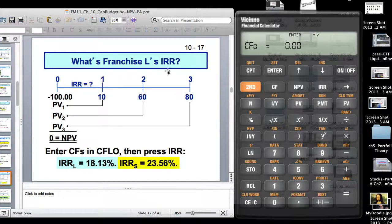What is franchise L's internal rate of return? So here your cash inflows 10, 60 and 80. Remember, we're still working with two cash lines, L and S, two projects. IRR was given as 10 previously, but it's not. This is a variable that we want to identify. Your initial cash outflow is 100 dollars. Present value 1, present value 2, present value 3. If you add them up, your NPV should equal 0.